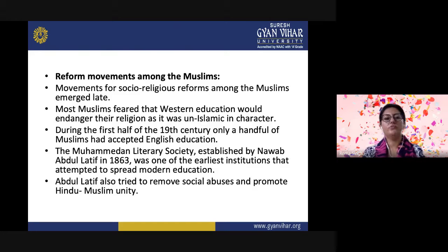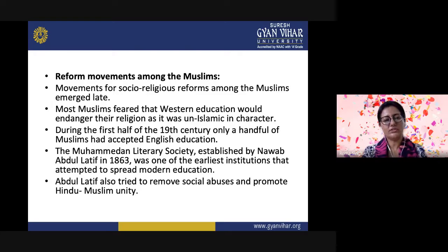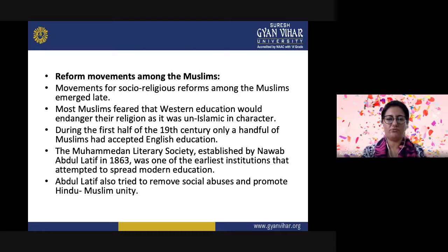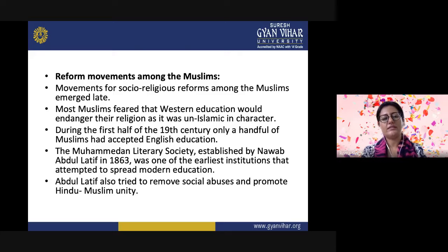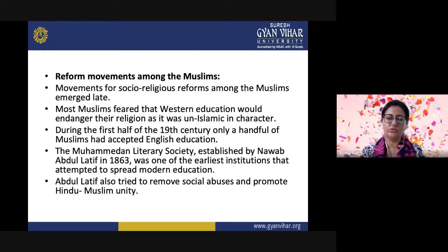Now we will talk about reform movements among the Muslims. Movements for socio-religious reforms among Muslims emerged a little late. Most Muslims feared that Western education would endanger their religion, as it was considered un-Islamic in character. During the first half of the 19th century, only a handful of Muslims had accepted English education. The Mohammedan Literary Society, established by Nawab Abdul Latif in 1863, was one of the earliest institutions that attempted to spread modern education. Abdul Latif also tried to remove social abuses and promote Hindu-Muslim unity.